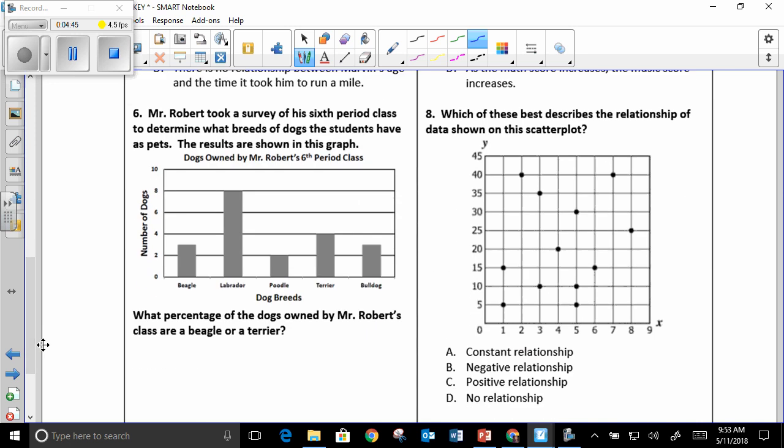Number six, Mr. Robert took a survey of his sixth period class to determine what breeds of dogs the students have as pets. The results are shown. What you needed to do first was write your numbers up here. This one was 8, poodles 2, terriers 4, bulldogs 3. So you had to write those numbers down.